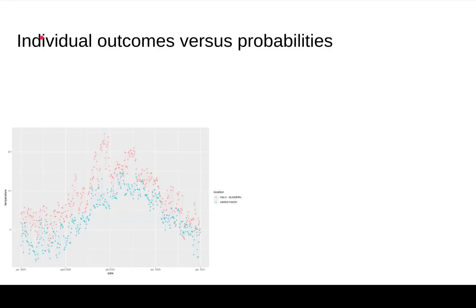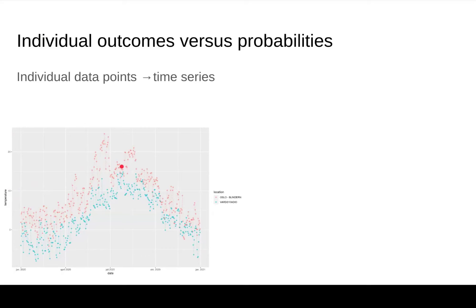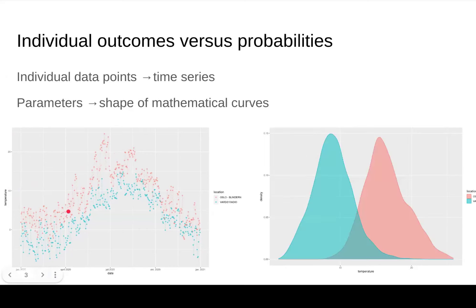The traditional way of downscaling has been focused on individual data points, which when combined in time give a time series. Here's one example with temperature data for Oslo and Vardø in Norway. We can see that they have different climates. In climate change work, we are interested in the climates rather than the weather, so we want to estimate the statistical properties of temperature or rainfall. The temperatures can be viewed as histograms, which provide information about probabilities or the frequencies of how often they appear. The goal is to find parameters which can describe the shape of these curves and estimate them directly, rather than estimating them through individual data points.